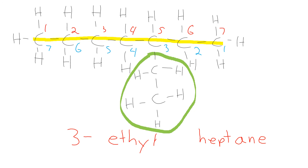You see the same pattern: the A-N-E ending is the functional group — alkane; hept describes the longest continuous carbon chain; ethyl describes the size of the branch; and the number three describes the location of that branch.